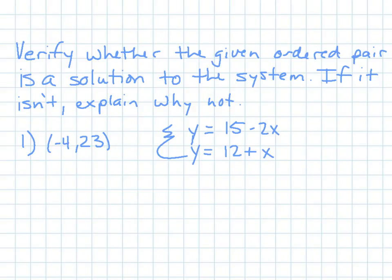Now, if you move to the bottom of page 3 on your guided notes, it asks you to verify whether the given ordered pair is the solution to the system. If it isn't, explain why not. So, what we're checking here is to see if the point given to us, in this case, negative 4, comma 23, is going to work for this equation and this equation. So, what needs to happen, because this is x and this is y, I'm going to plug them in for the x and the y's of these equations to see if they work.